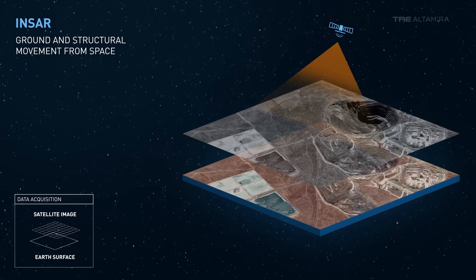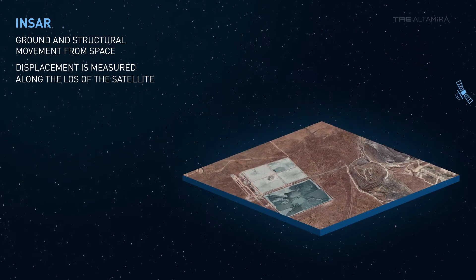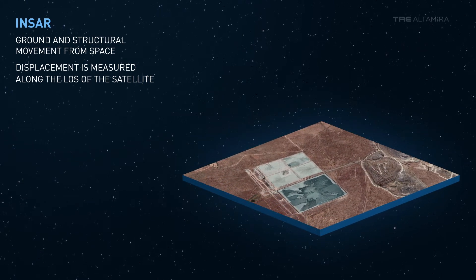INSAR provides displacement measurements with respect to the line of sight, or LOS, of the satellite in the ascending and descending orbits.